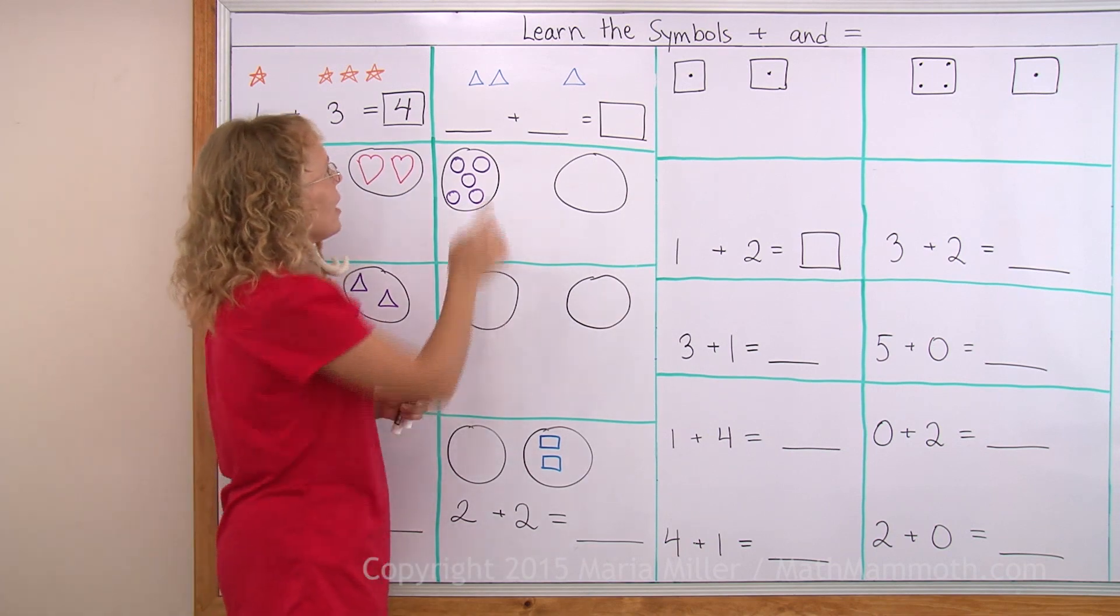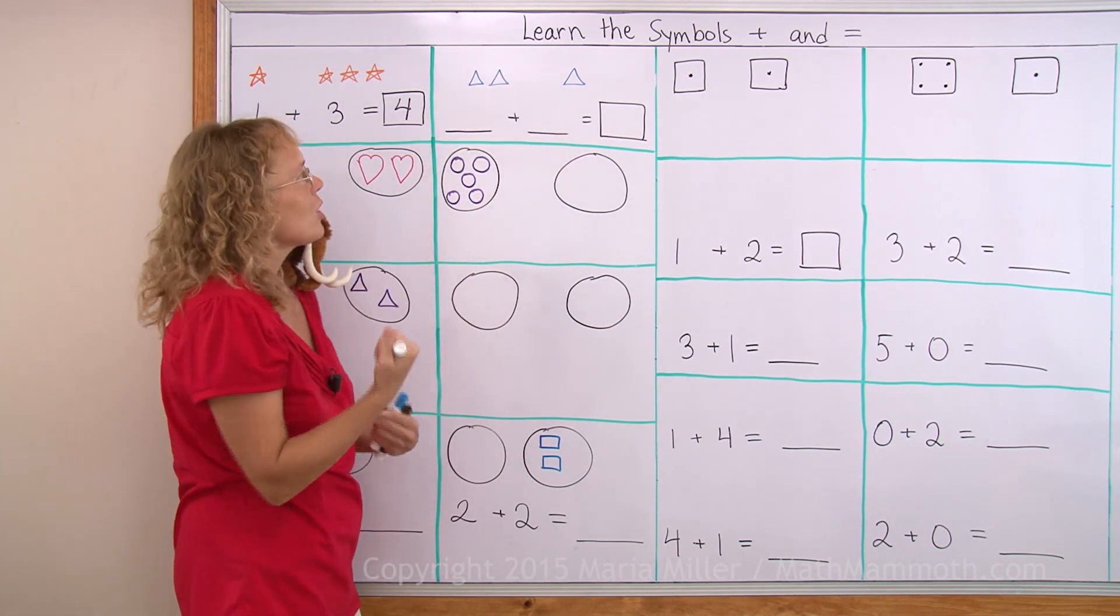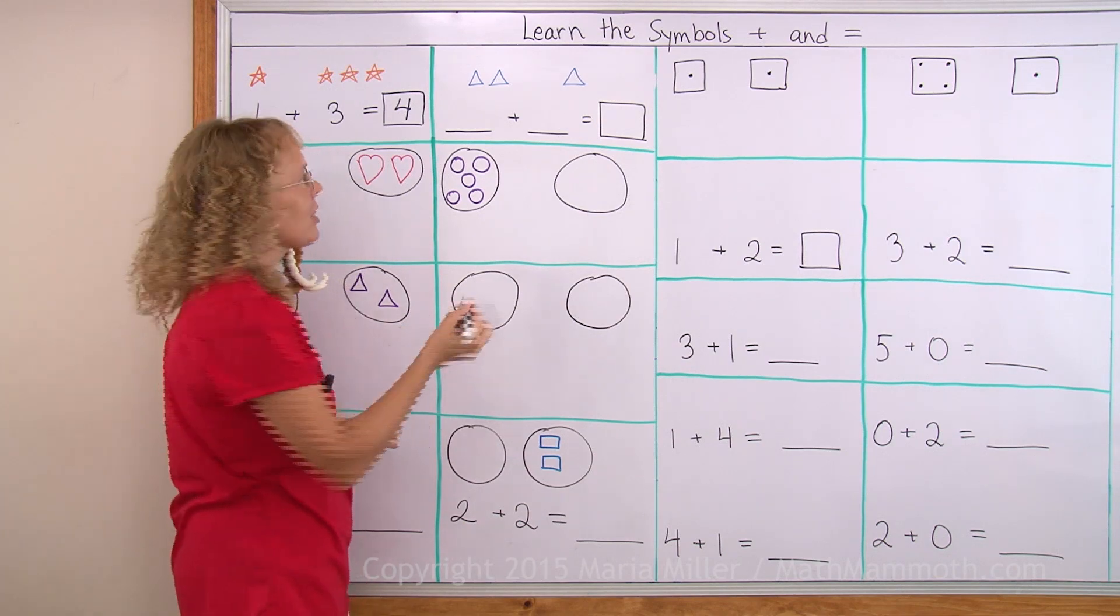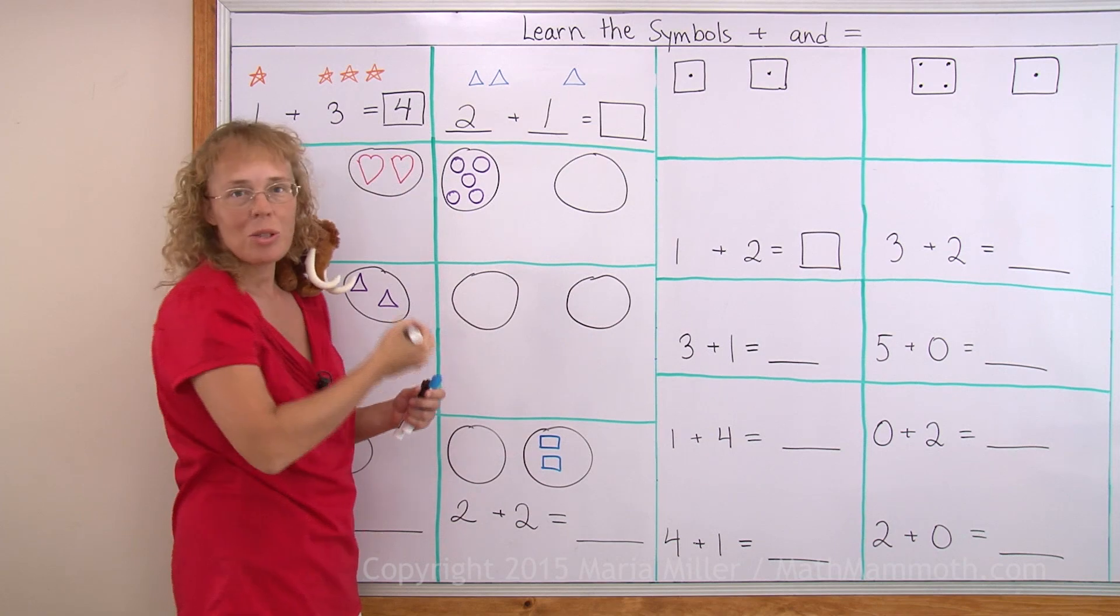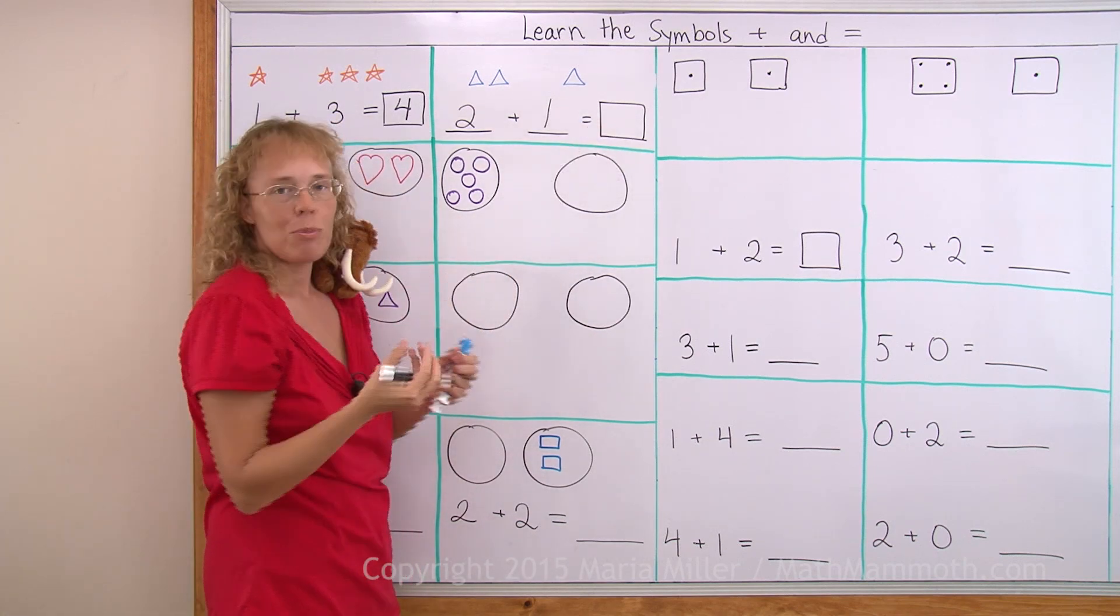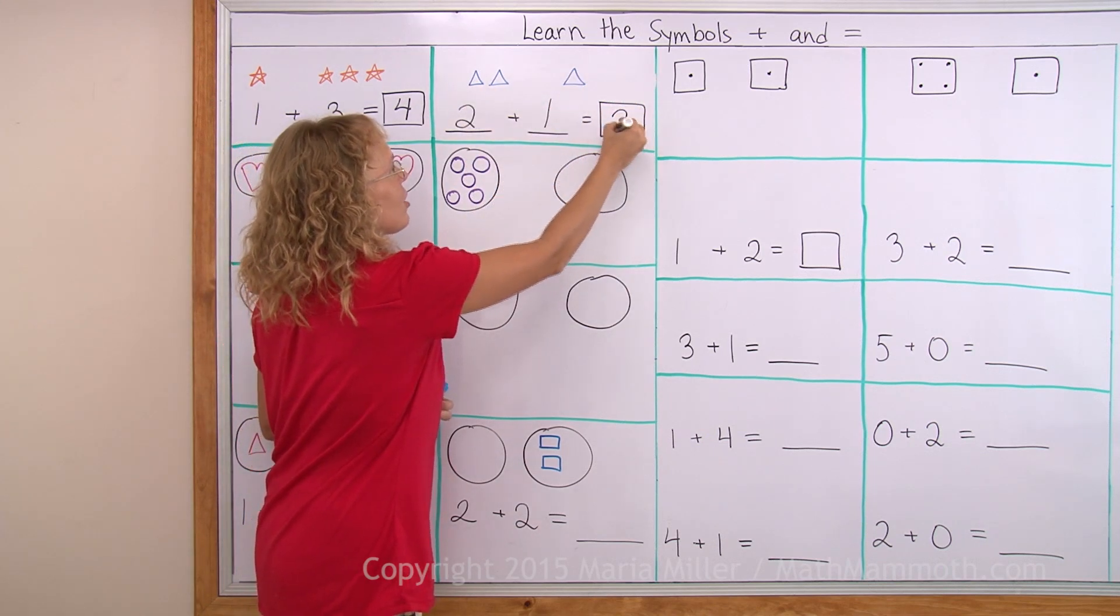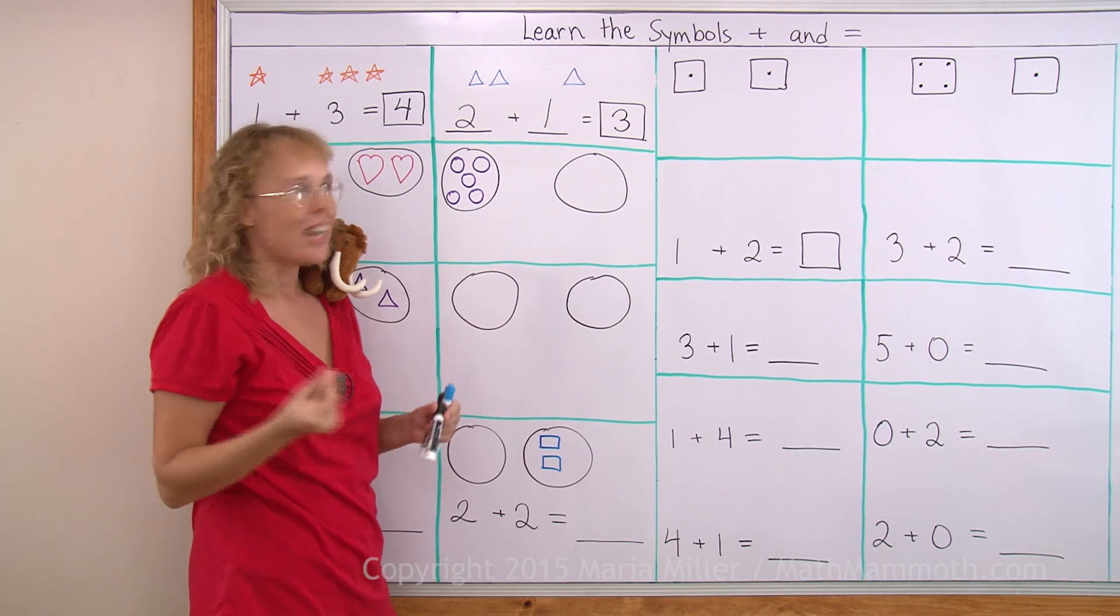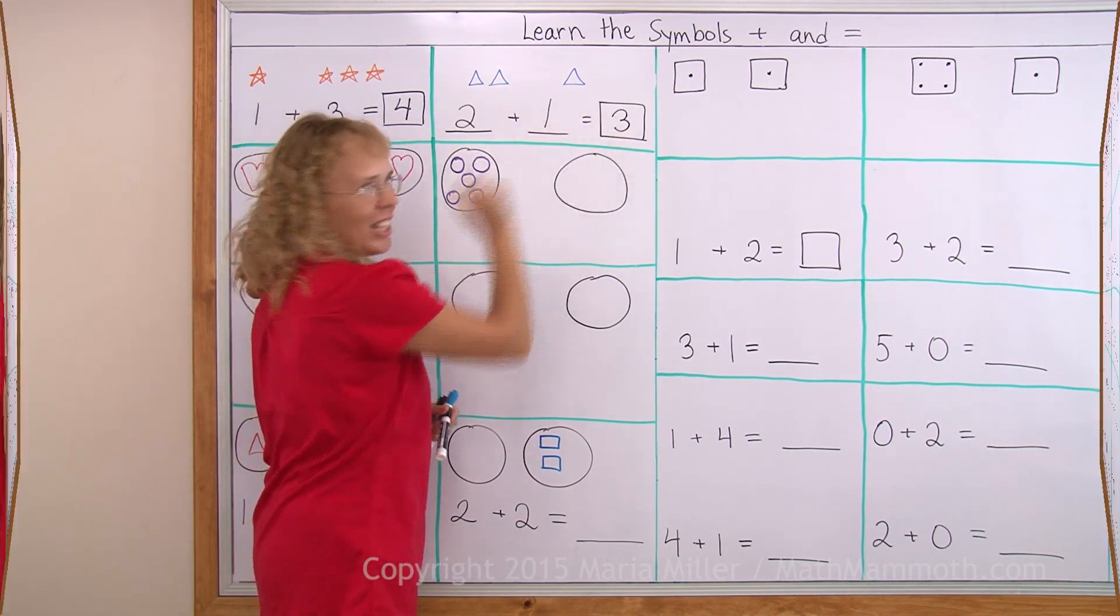Another example. Here I have a group of two and a group of one so I can write an addition from it. There's two plus one. It means two and one and then equals after that I get how many in total? One, two, three. Three in total. So three goes in the box and I read this one more time. Two plus one equals three.